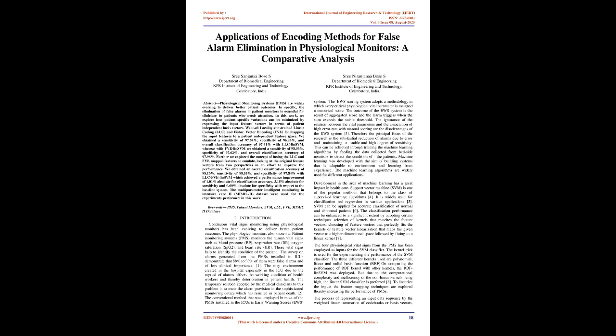The noisy environment created in the hospital, especially in the ICU, due to the myriad of alarms affects the working condition of health workers and thereby leads to deterioration in patient health. The temporary solution adopted by medical clinicians is to mute the alarm provision in the monitoring device, which has resulted in patient death. The conventional method employed in most PMSs installed in ICUs is the early warning scores, EWS, system. The EWS scoring system assigns every critical physiological parameter a numerical score, and the alarm triggers when the aggregated sum exceeds a stable threshold. The ignorance of the relation between vital parameters and the high error rate with manual scoring are the disadvantages of the EWS system.